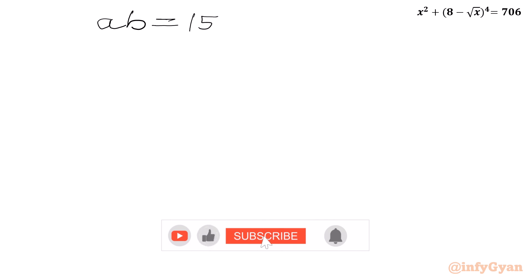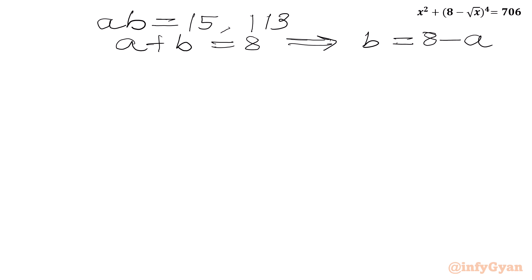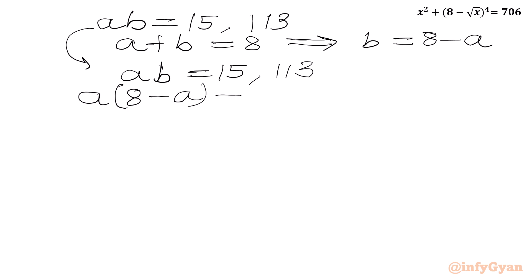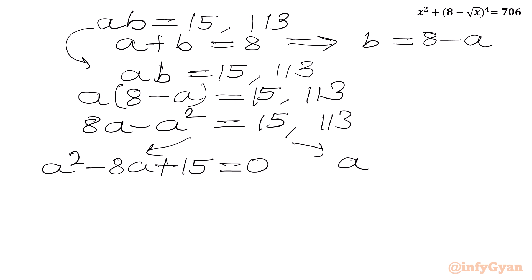So we have ab equal to 15 and 113, and a plus b equal to 8. From the first equation, b equals 8 minus a. Substituting: a times 8 minus a equal to 15 and 113. This gives us two quadratic equations: a square minus 8a plus 15 equal to 0, and a square minus 8a plus 113 equal to 0.